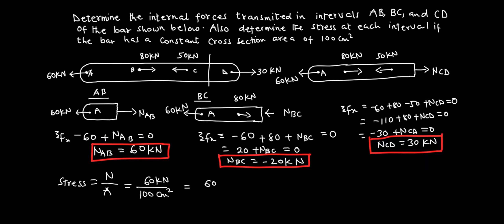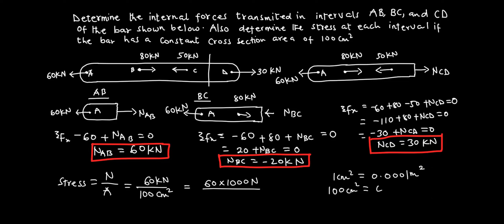Let's do the unit conversion. 60 kilonewtons is 60 times 1000 newtons. For the area: 1 cm squared equals 0.0001 meter squared, so 100 cm squared equals 100 times 0.0001, which equals 0.01 meter squared. So the expression becomes 60,000 newtons divided by 0.01 meter squared.